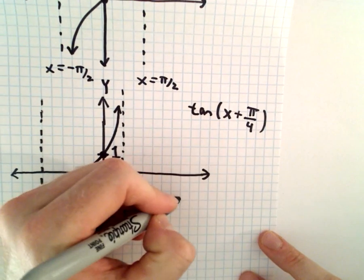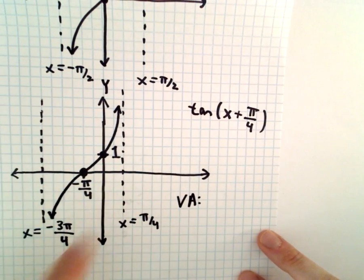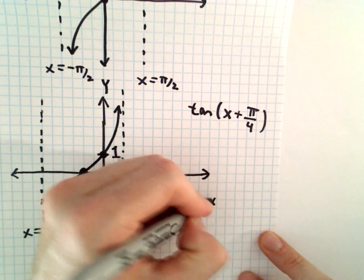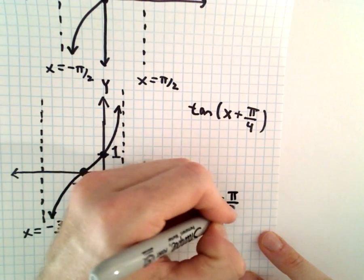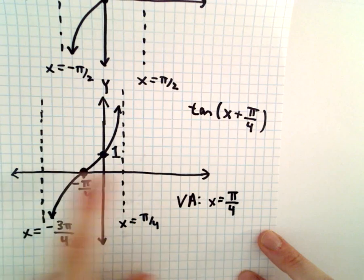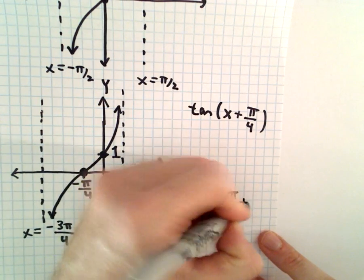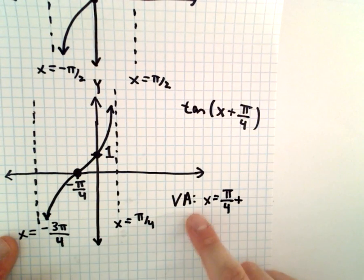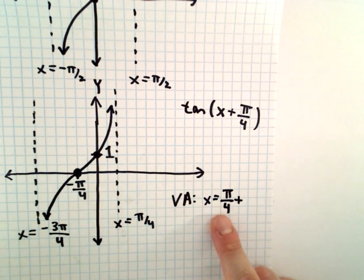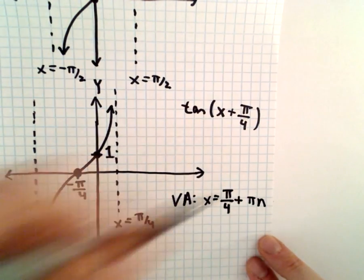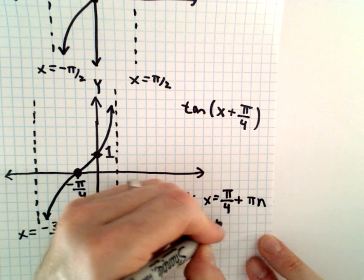In this case, the vertical asymptotes, we've got a positive one at x equals pi over 4, and to get to another one, we basically just add or subtract multiples of pi. So we can write that as the vertical asymptotes occur at x equals pi over 4 plus pi times n, where n is an integer.